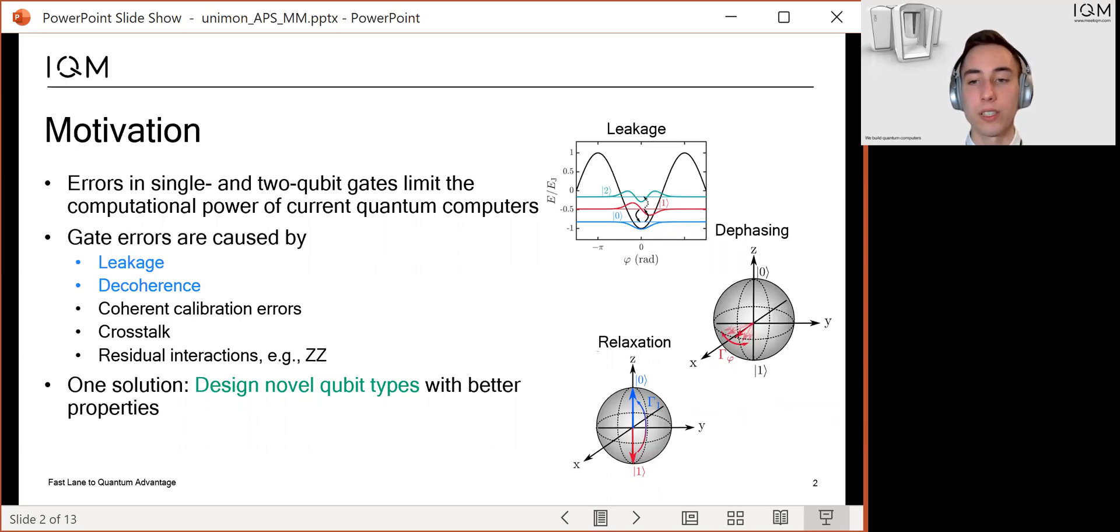These gate errors can be caused by multiple factors. First, the qubit can leave the computational subspace if the qubit circuit is only weakly anharmonic, like in a transmon. This phenomenon is known as leakage. Secondly, noise in the environment of the qubit can lead to relaxation and dephasing errors. Other error sources include calibration errors, crosstalk, or residual interactions.